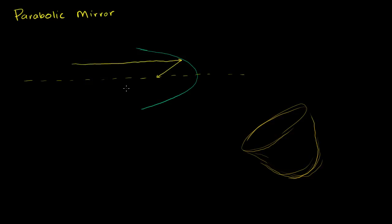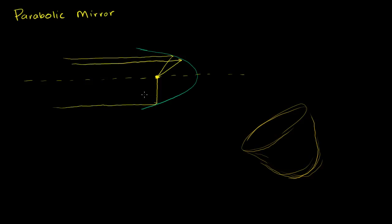Now let me draw another parallel ray. A parallel ray coming in there hits the parabolic mirror and reflects. If I have another ray that comes in like this, it will reflect so that the reflection goes right over there. What's neat is that any incident light ray that's parallel to the principal axis of this parabolic mirror — the reflected ray is going to go through the same point. No matter where it hits the mirror, as long as it was parallel to the principal axis, the reflected ray is going to hit this point. And this point right here is the focus.